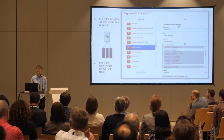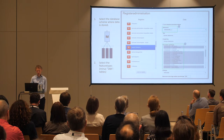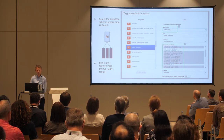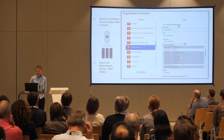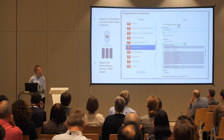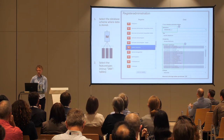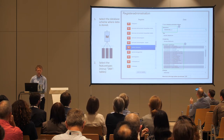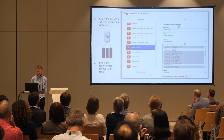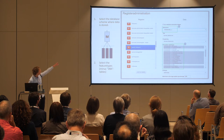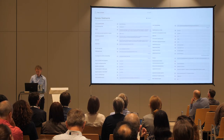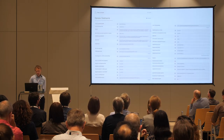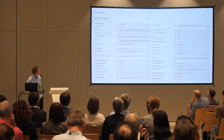In the administration module, we configure the internal dataset: we select which database schema this dataset belongs to, and we select the tables which belong to that schema, where the actual data is stored. Tables are equivalent to feature types. This is where we create the configuration part of the architecture diagram I showed before.